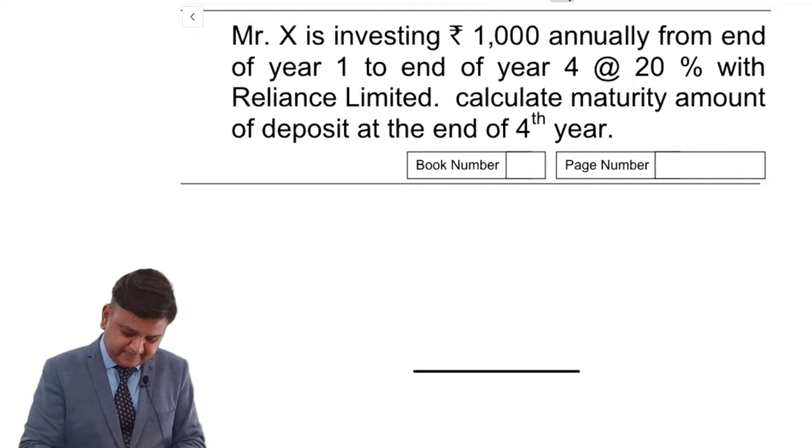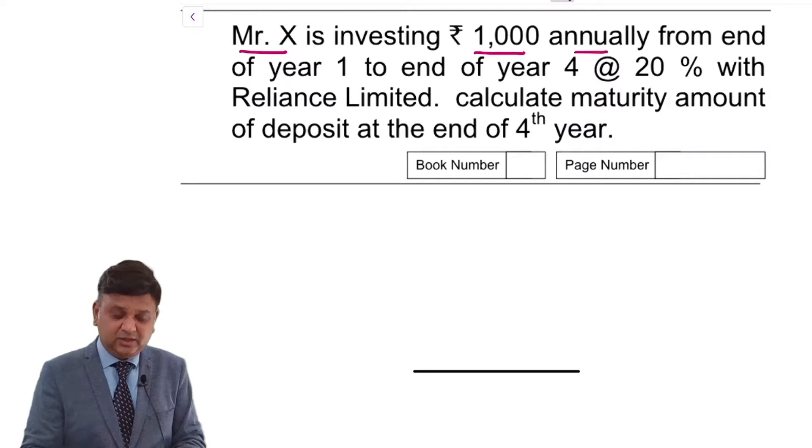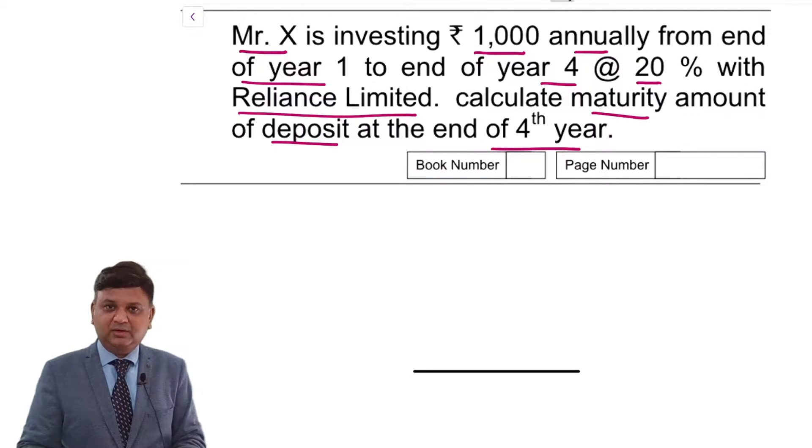Next question. Mr. X is investing Rs. 1000 annually from end of year 1 to end of year 4. Rate of interest is 20% with Reliance Limited. Calculate maturity amount of deposit at the end of 4th year.